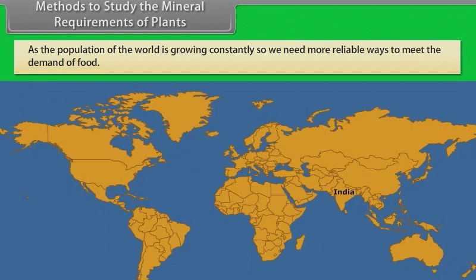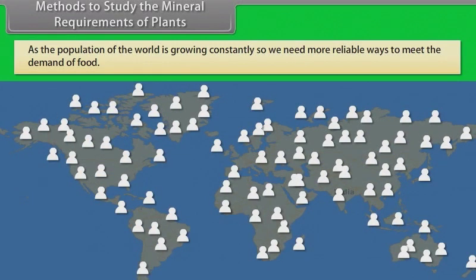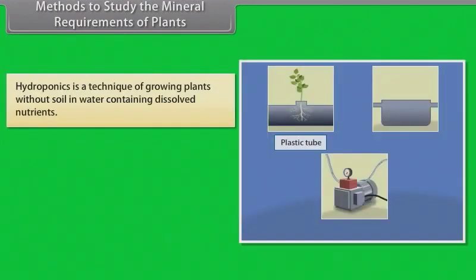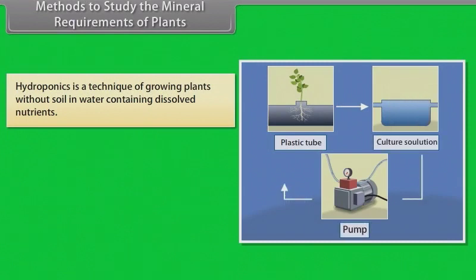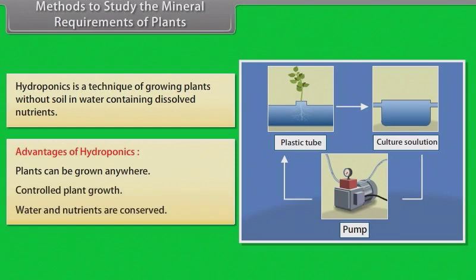Methods to study the mineral requirements of plants: As the population of the world is growing constantly, we need more reliable ways to meet the demand of food. One such technique is hydroponics. Hydroponics is a technique of growing plants without soil, in water containing dissolved nutrients. Advantages of hydroponics: plants can be grown anywhere, controlled plant growth, and water and nutrients are conserved.